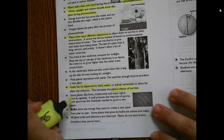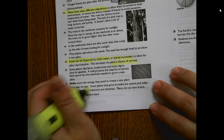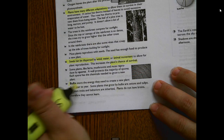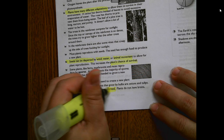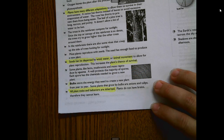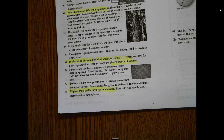All plant traits and behaviors are inherited. Unlike animals — for example, a dog can learn how to sit. That wasn't something it inherited; it was a learned behavior.